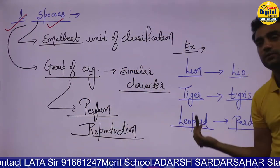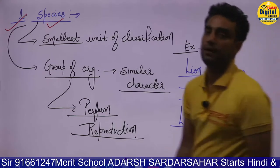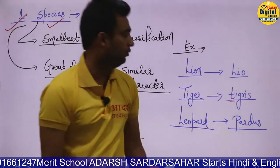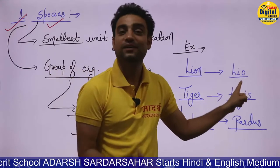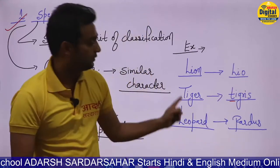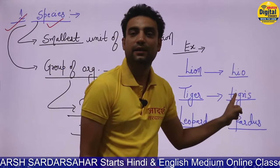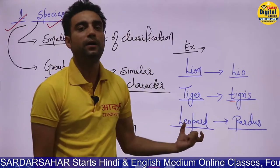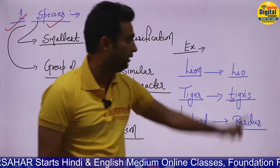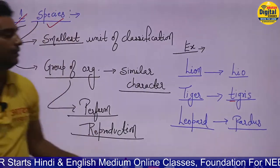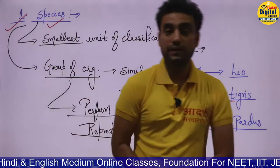Now examples of species: lion, tiger, and leopard. The species of lion is leo. The species of tiger is tigris. And the species of leopard is pardus. So these are examples of species of different animals.